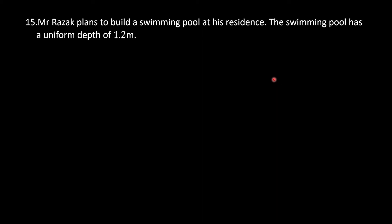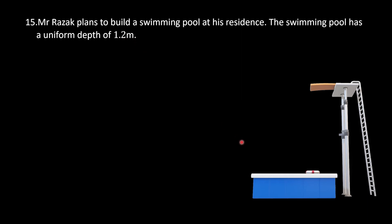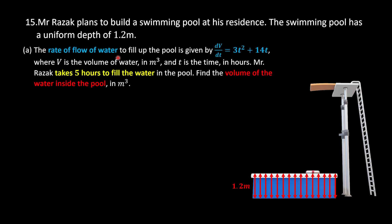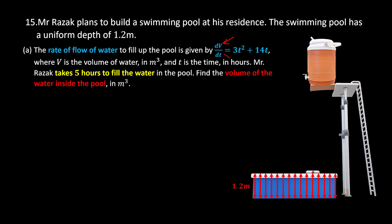Question 15: Mr. Raza wants to build a swimming pool with a uniform depth of 1.2 meters. The rate of flow of water to fill the pool is given by dV/dt = 3t² + 14t, where V is volume in m³ and t is time in hours. Mr. Raza takes five hours to completely fill the pool.